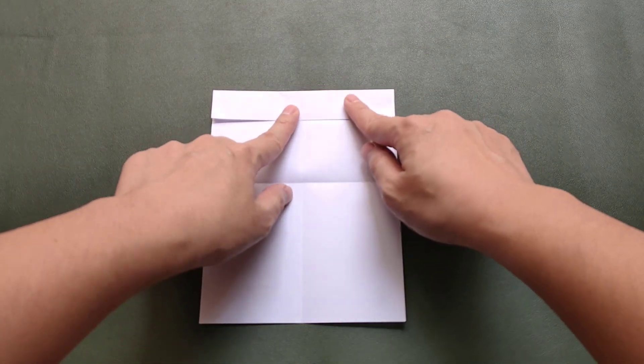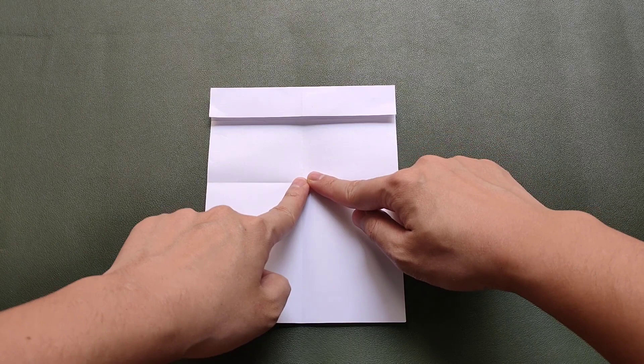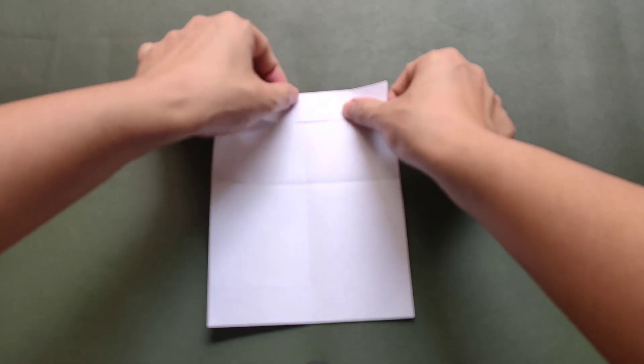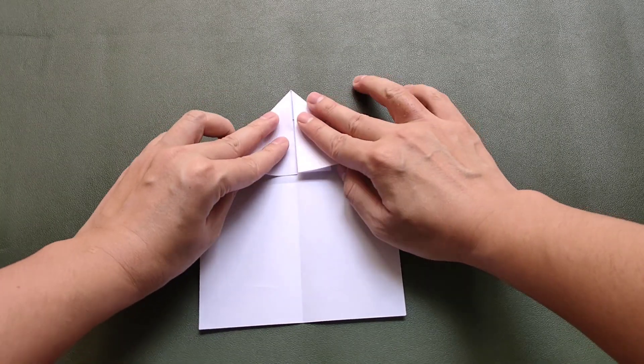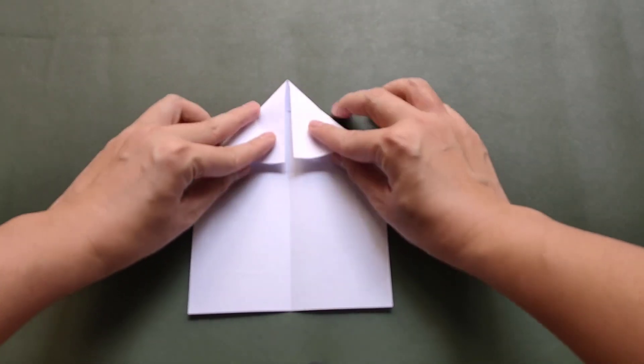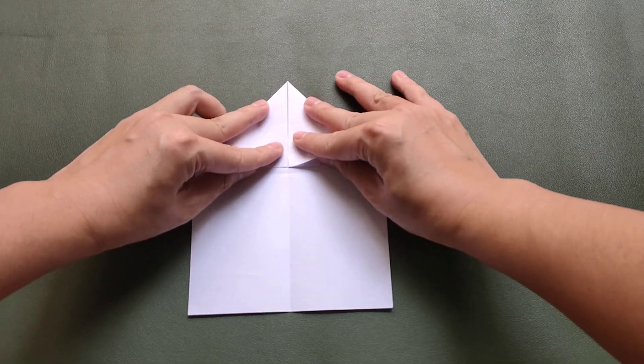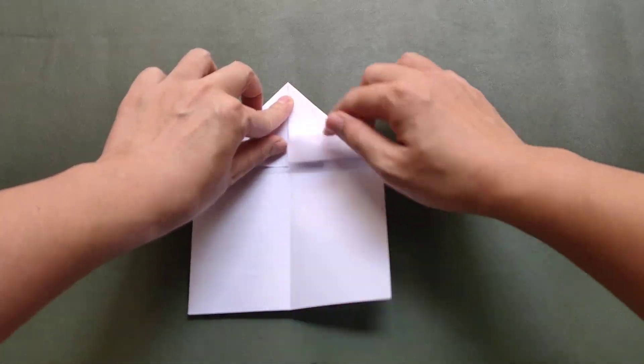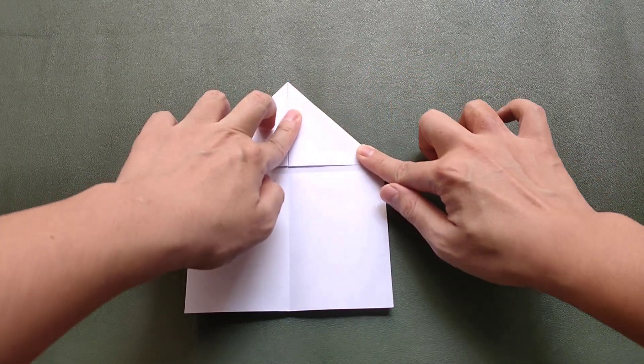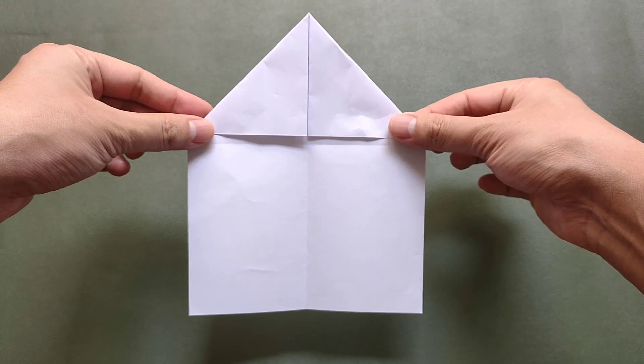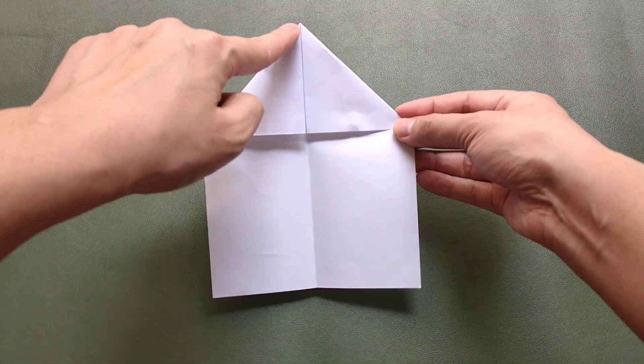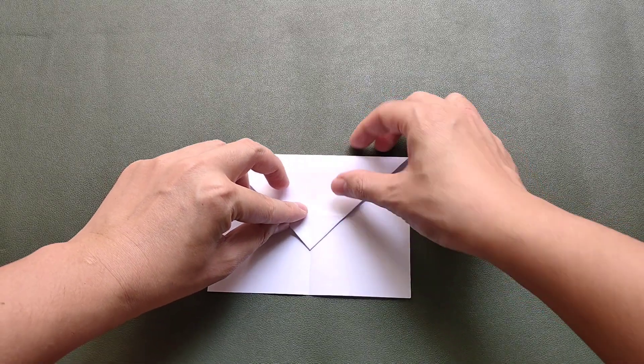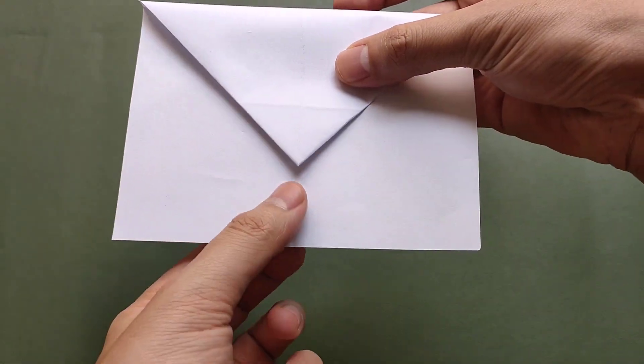Bây giờ chúng ta sẽ gấp như sau: chúng ta gấp hai bên vào điểm chính giữa. Bây giờ chúng ta sẽ gấp đường này xuống dưới đường này. Chúng ta chú ý để gấp đúng với mép này.